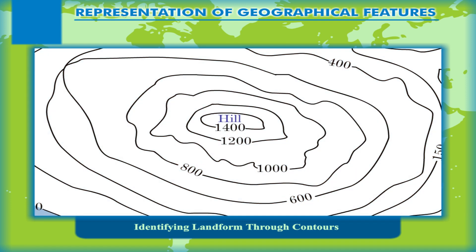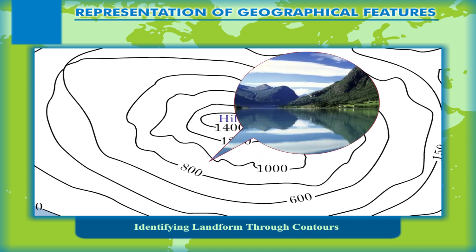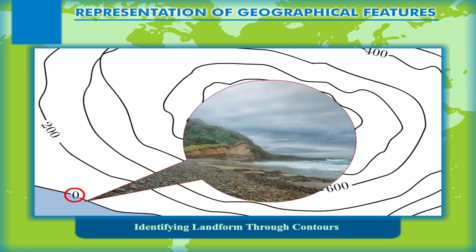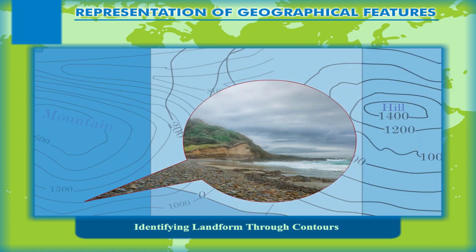The widely spaced contour lines show a gentle slope, whereas the closely spaced contour lines show a steep slope. All contour lines are marked with a number which indicates their height above the mean sea level in metres or in feet. The contour with zero value represents the coastline.